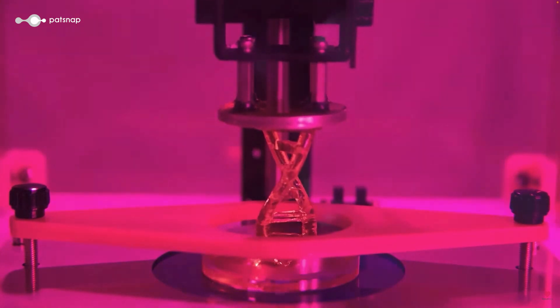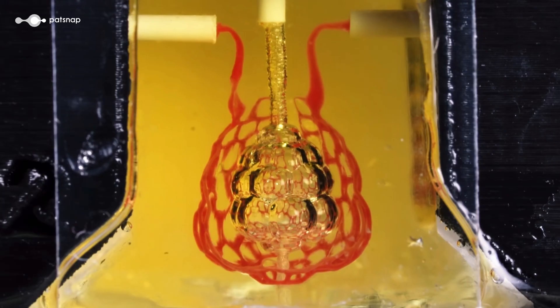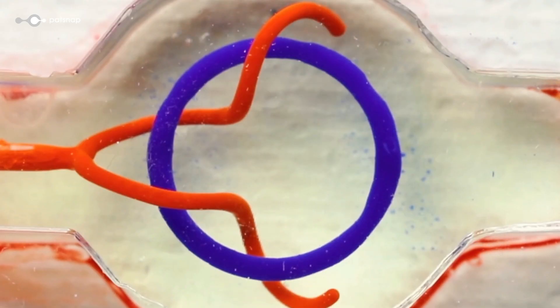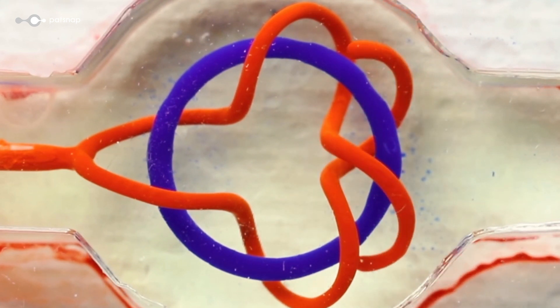The precision of SLA bioprinting comes from the focused light source, which can accurately create incredibly complex shapes with high resolution. While it can be a slower process for larger structures, in some cases taking months for a single print, SLA bioprinting is a powerful tool in tissue engineering and regenerative medicine.